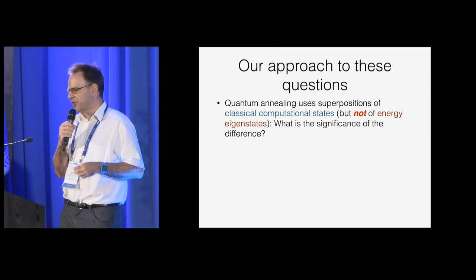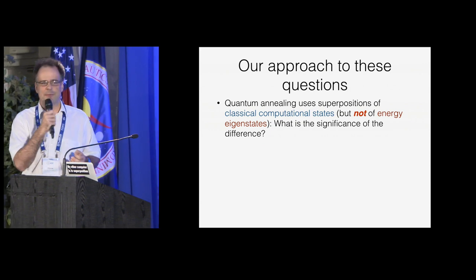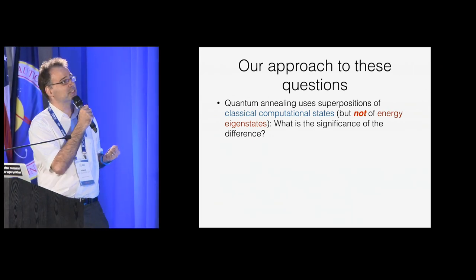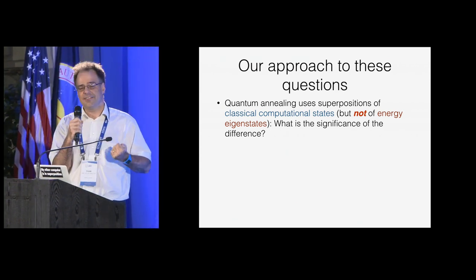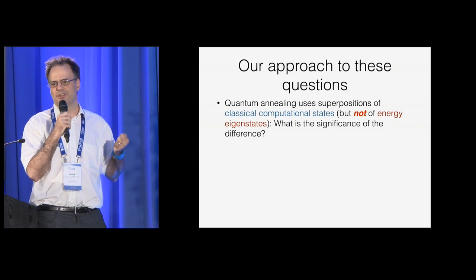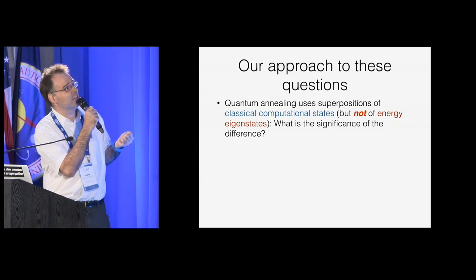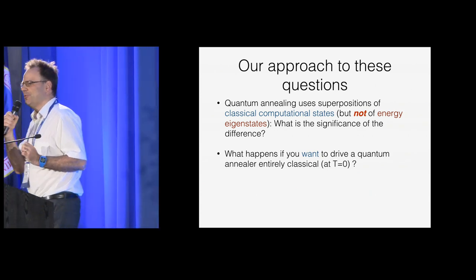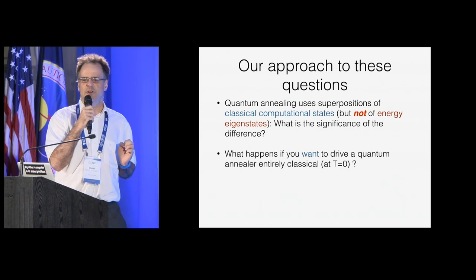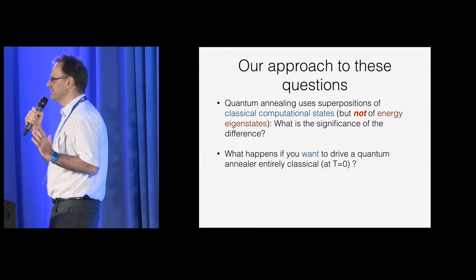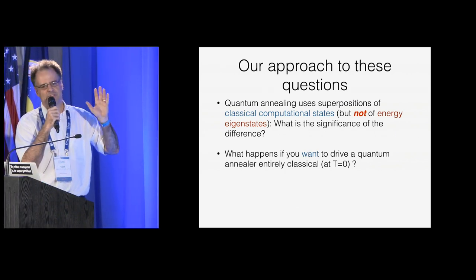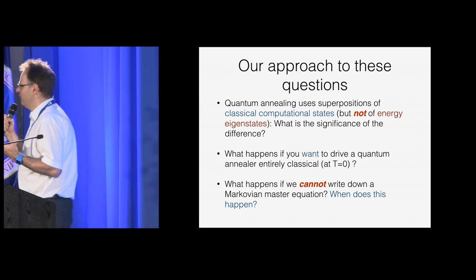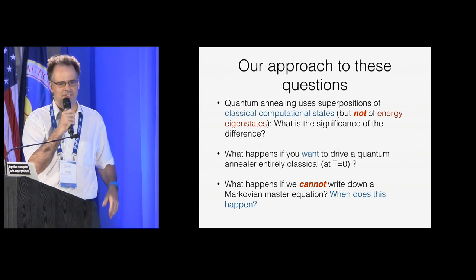Computational power in quantum annealing comes from superpositions of classical computational states — the states that we read out. We use the driver Hamiltonian to create those superpositions, but we do not really need to create superpositions of the temporal energy eigenstates. We try to answer this by trying to really destroy quantum annealing by coupling to the environment as hard as we can, ruling out classical noise effects like 1/f noise, and looking at what happens at zero temperature — a situation where it's hard to write down a Markovian master equation.